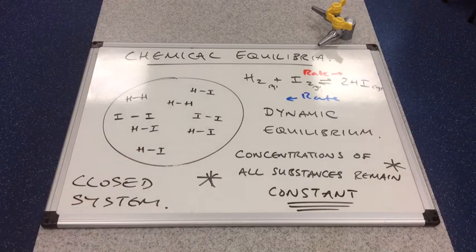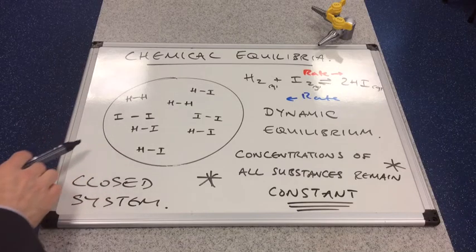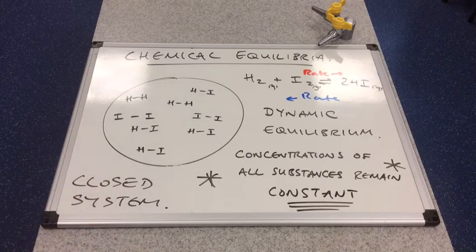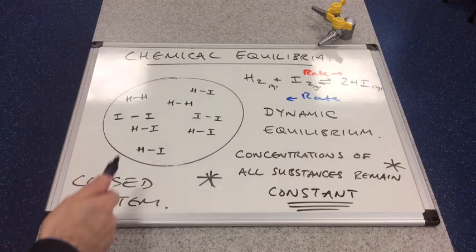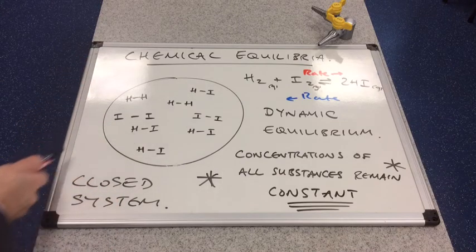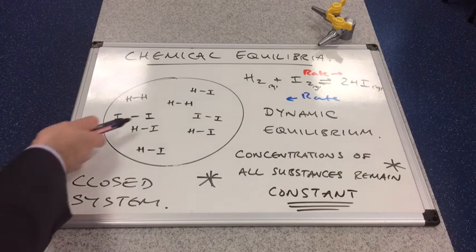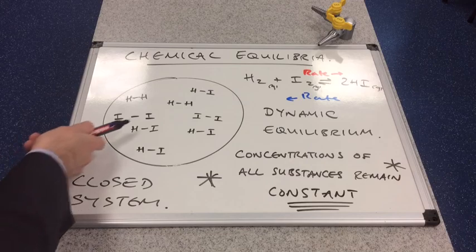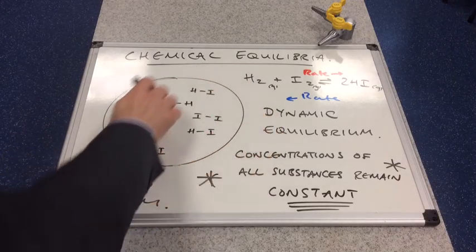What we mean by that is matter, material, can't enter or escape from the vessel, because if it did it would ruin the equilibrium. So it must be a closed system. Energy can get in and out, as you're going to see when we look at something called Le Chatelier's principle. Energy can be passed inside and out of the system, but matter can't get in or out, so everything's within this boundary here.